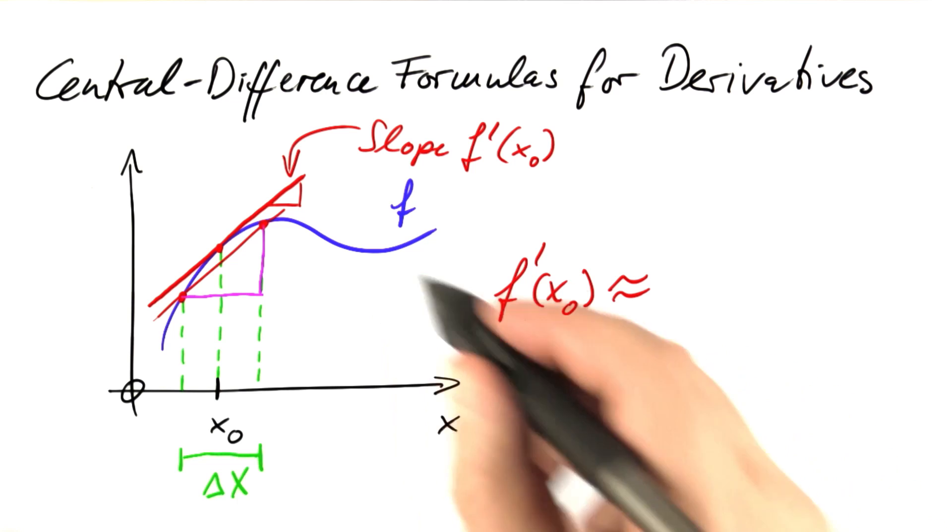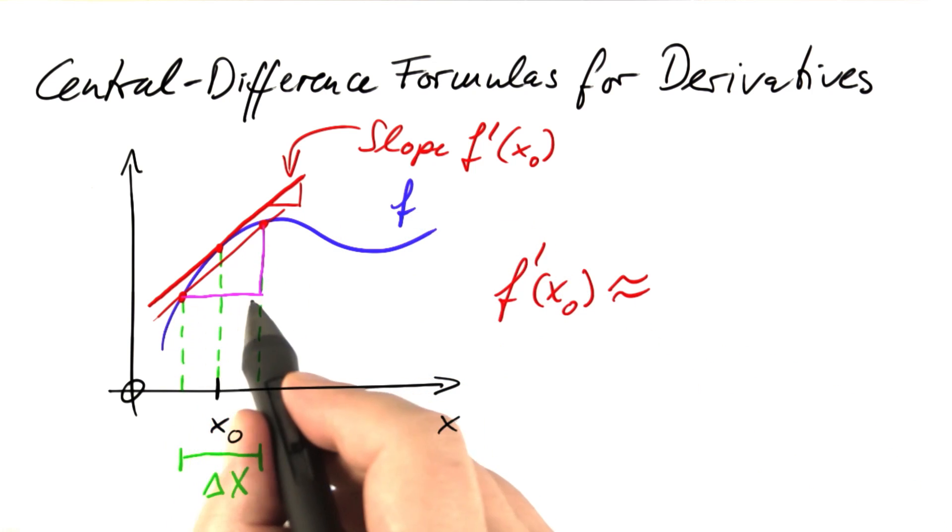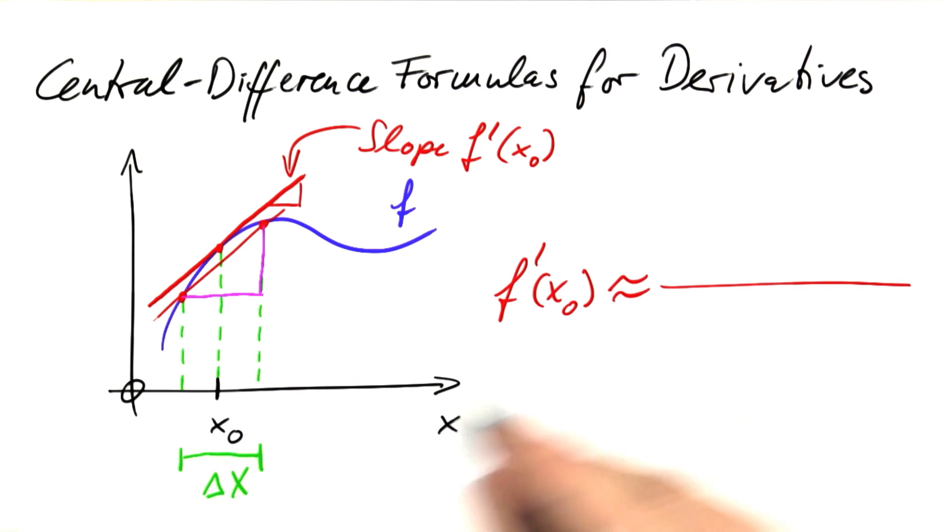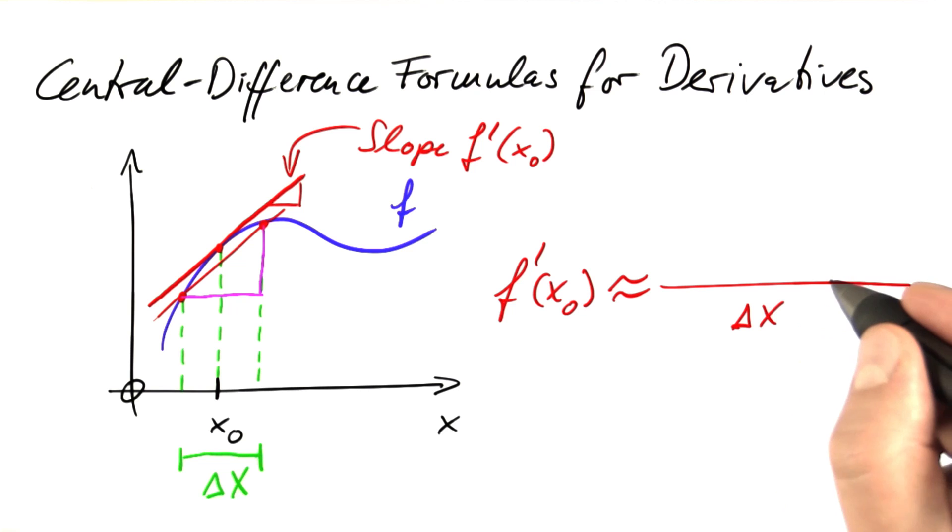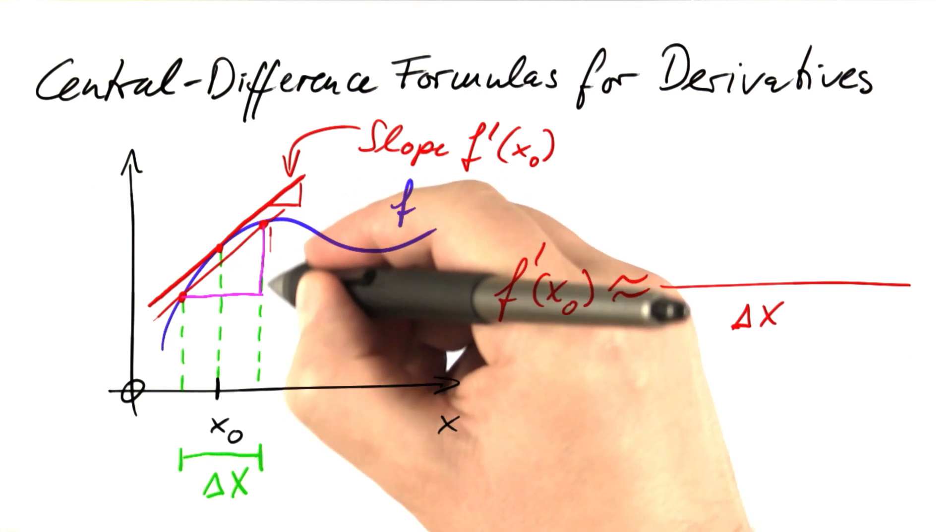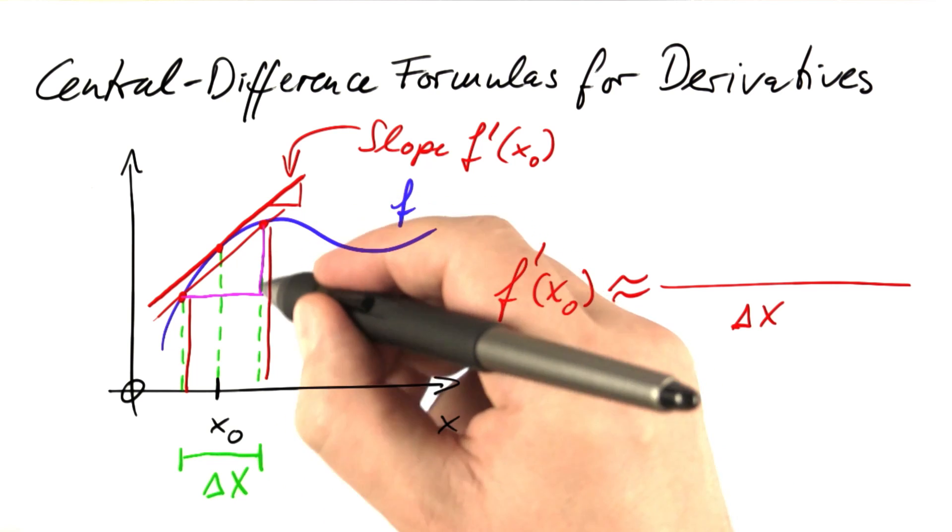The estimate for the slope would be what we gain in height divided by how far we went to the right. The denominator is simple. Delta x is how far we went to the right. The numerator is a little more complex. It's the difference of this value of the function minus that value of the function. That's what we're gaining in height.